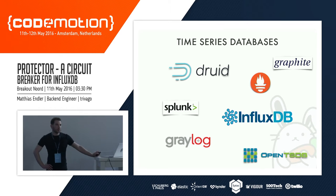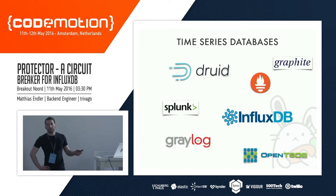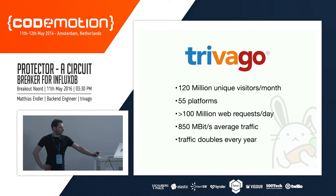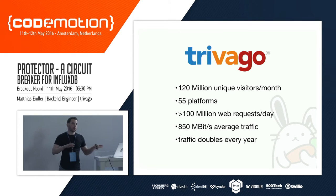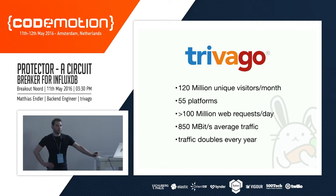This is also why we use it at Trivago — we've used it since the very early beta versions. Roughly some numbers: 120 million unique visitors per month, 55 platforms, 100 million requests per day — that's 850 megabits per second average traffic, and it doubles every year. Everybody working in that area knows it's just a humongous amount of data that you can monitor, and that's why a lot can go wrong, so you should do some monitoring.